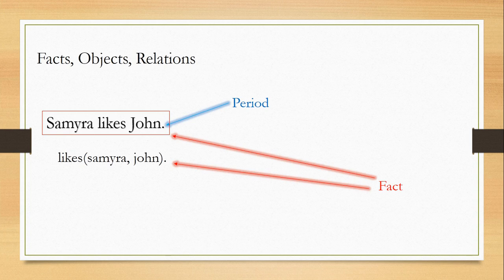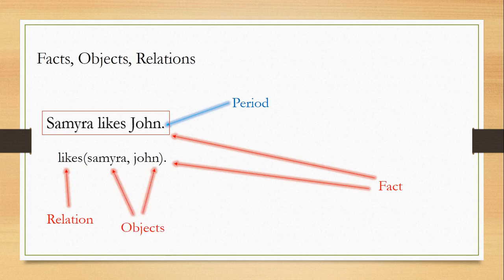Now let's see what likes, samaira, and john are - why are we dividing them? Likes indicates the relation between Samaira and John. So Samaira and John are my objects. I can read it like: Samaira likes John. Both are objects and the relation between them is likes.